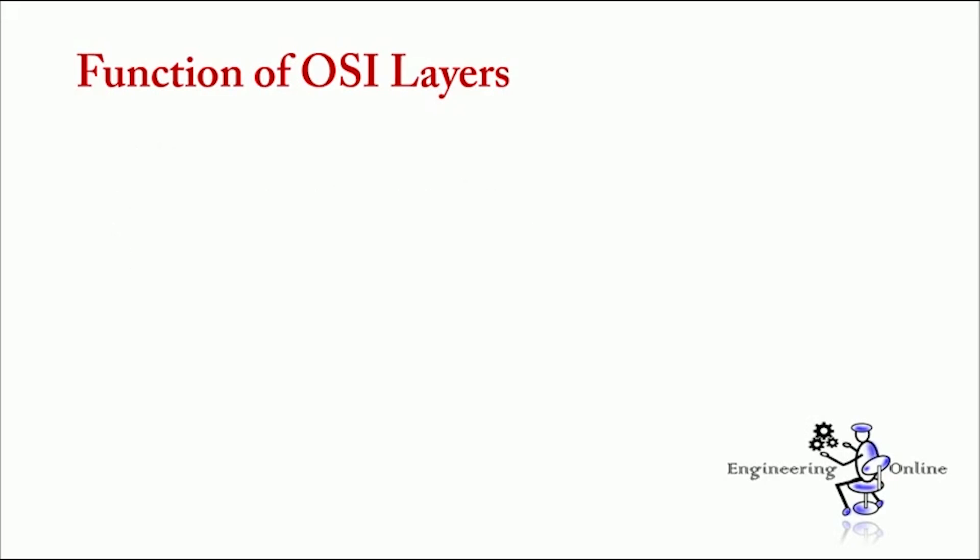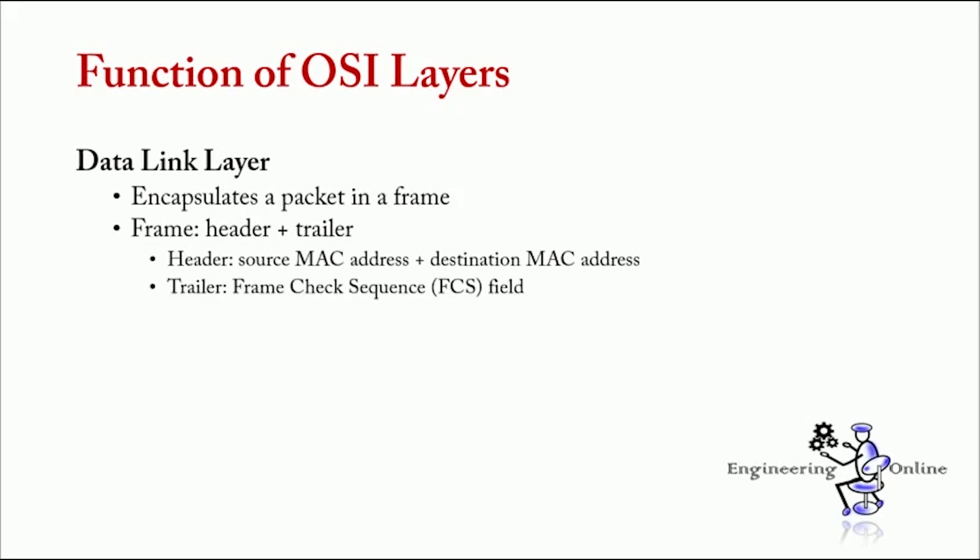Next, we have data link layer. It encapsulates a packet in a frame. A frame mainly contains a header and a trailer that enable devices to communicate. Header most commonly contains a source and destination MAC address, whereas trailer mainly contains frame check sequence, which is used to detect the transmission errors.